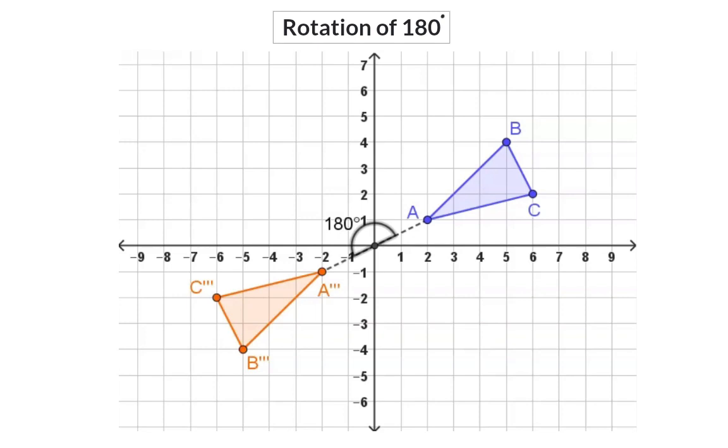If we have a look at what happened to the coordinates, we can start looking at A which is (2,1), and A' is (-2,-1), which means both coordinates changed sign. So, for a rotation of 180 degrees, both coordinates changed sign.